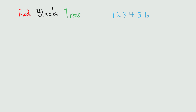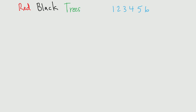Welcome to our twenty-second video on data structures and algorithms. We are going to do an example of a red-black tree. It's basically a type of binary search tree, so we're going to use those insert operations. But it has some special properties that help it stay balanced. We're going to insert the numbers one through six in that order.